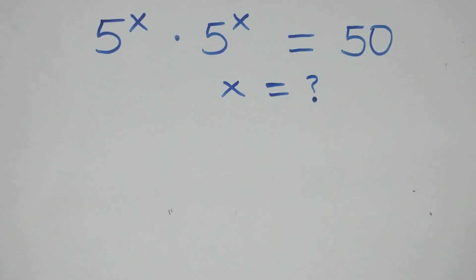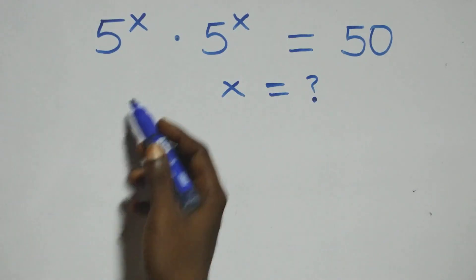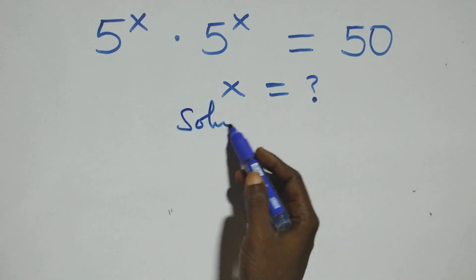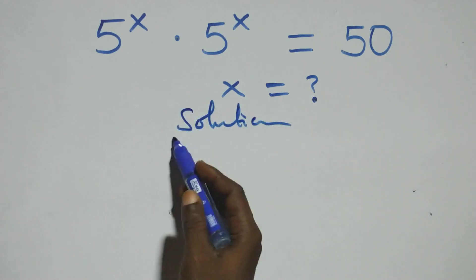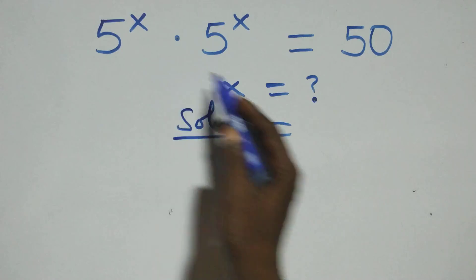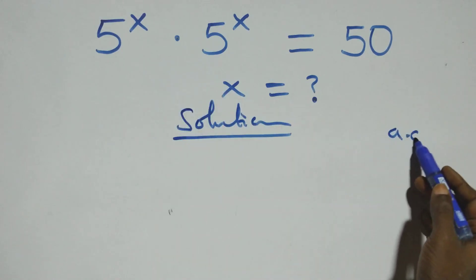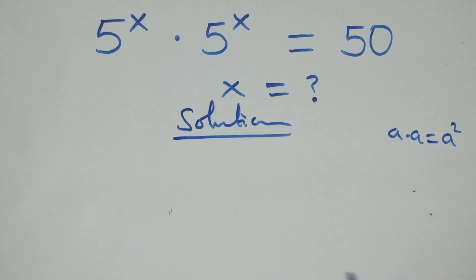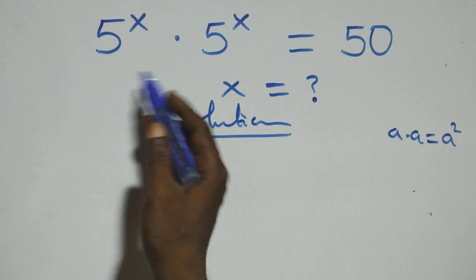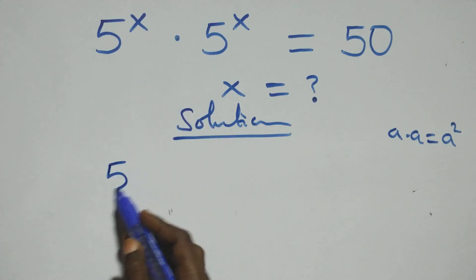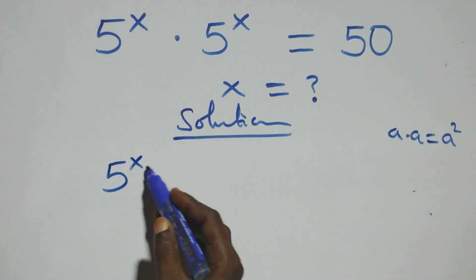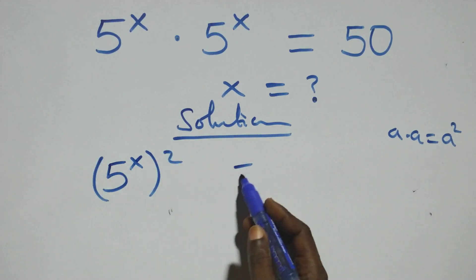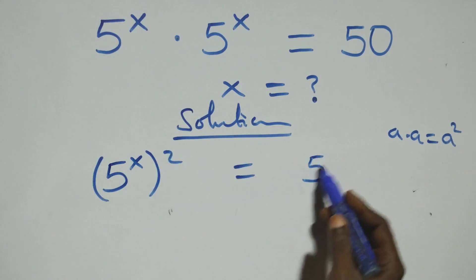Hello, you are welcome. Here we solve a nice exponential equation. From what we have, a times a can be written as a squared, so this same thing multiplying gives us 5 raised to power x, all squared, equals 50.